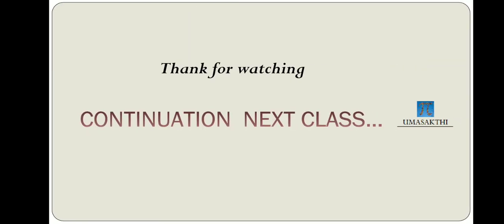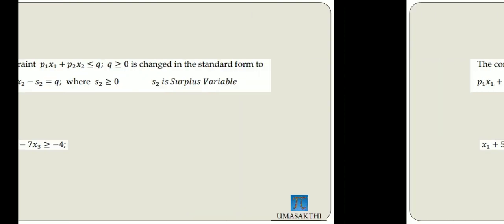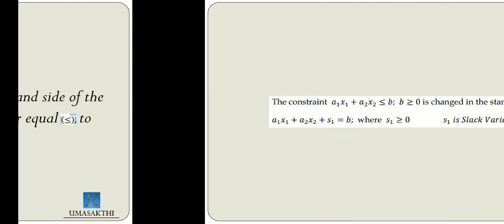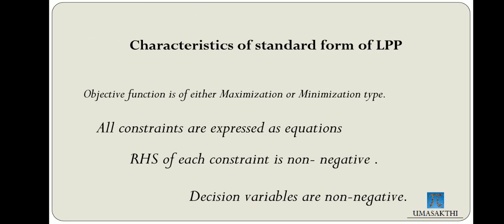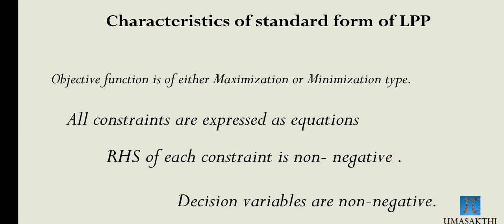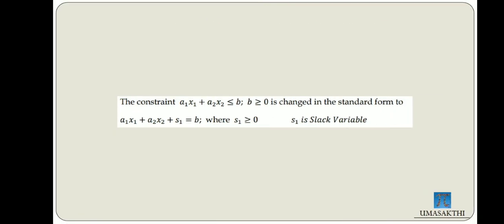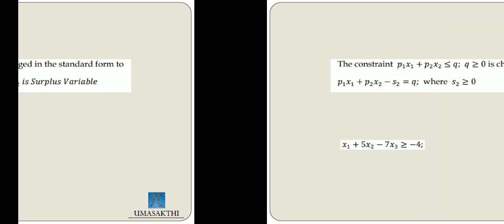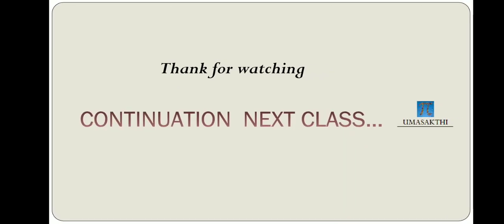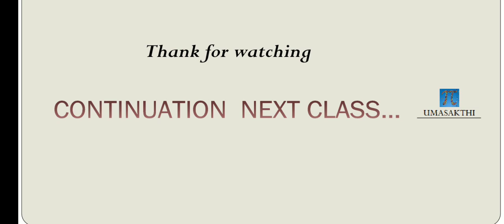To summarize: all constants are expressed as equations, RHS of constraints is non-negative, decision variables are non-negative, and objective functions are either maximize or minimize type. We saw slack variables and surplus variables in this class. In the next video we will see class 3. Okay friends, thank you.